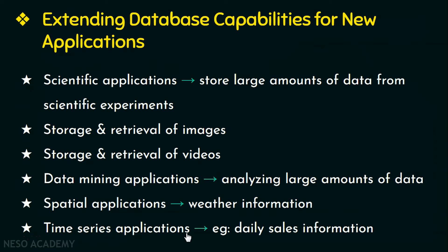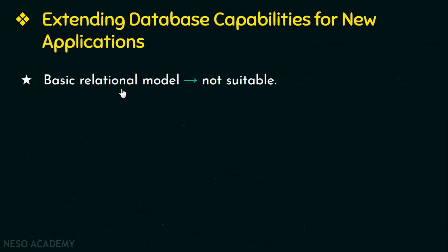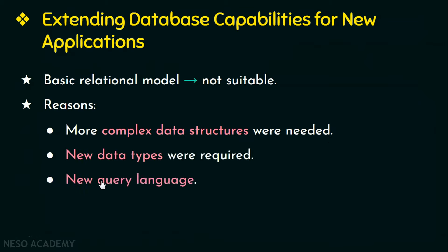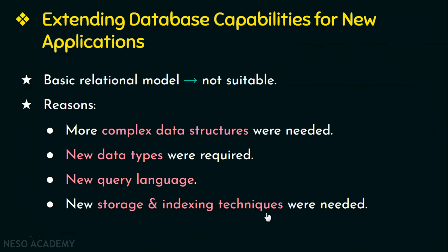Time series applications store data at regular points in time, like daily sales information. The basic relational model was not suitable for these applications because more complex data structures were needed, new data types were required, a new query language was necessary to manipulate these new data types, and new storage and indexing techniques were needed.